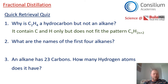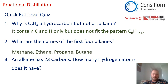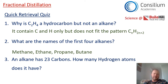What are the names of the first four alkanes? Can you remember the cheat? Monkeys eat peeled bananas — methane, ethane, propane, and butane. And finally, an alkane has 23 carbon atoms — how many hydrogens would it have? Applying CnH2n+2, we double 23 to get 46 and then add 2 to get 48.